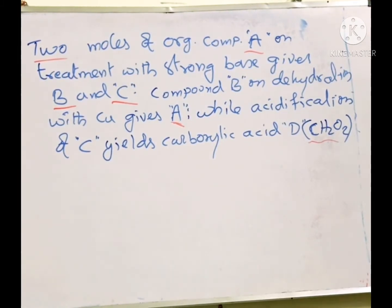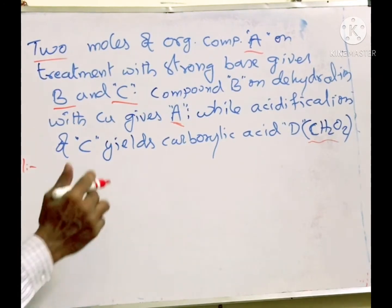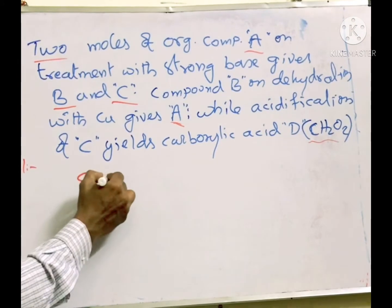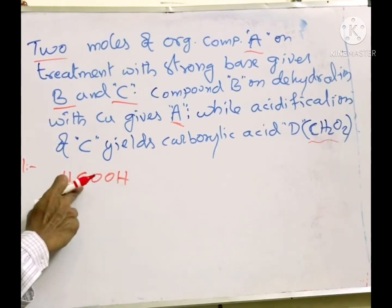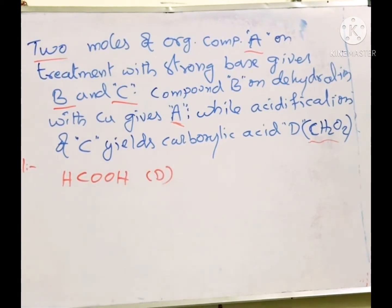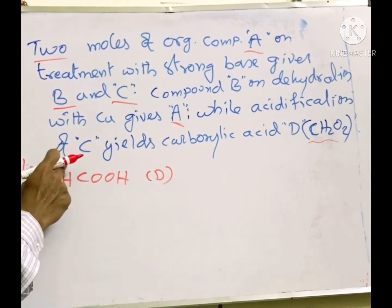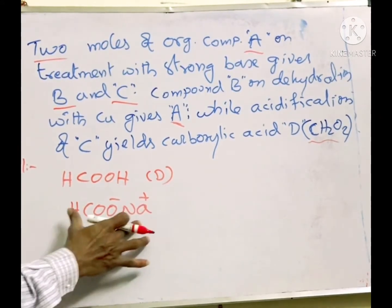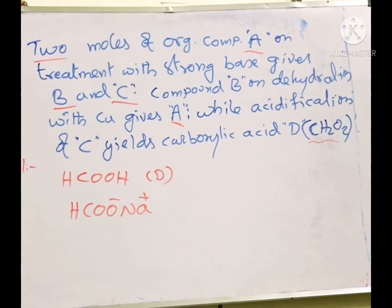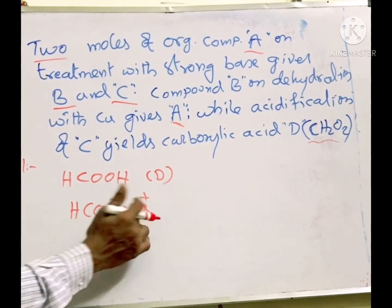For this question it is better to start with D itself, because the molecular formula is given for D and it is a carboxylic acid. A carboxylic acid with one carbon is HCOOH — this should be hydrogen — the simplest carboxylic acid with two hydrogens, two oxygens and one carbon. That means D is formic acid. If D is formic acid, come to the back: D was obtained by acidification of C. So C must be a salt — HCOONa — sodium formate.